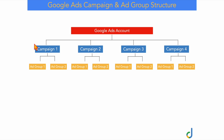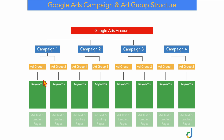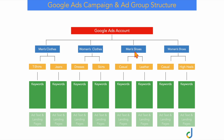The level below that, we have our different ad groups. For example, with our men's clothes campaign, you would have ad groups relating to men's clothes — so you might have a t-shirts ad group and then a jeans ad group. And then the level below that, we have all of our individual keywords relating to those products or services. Under women's clothes, you might have women's dresses, women's skirts, and women's jeans. And the same for the shoes — men's casual shoes and men's leather shoes, and women's casual shoes and any other type of shoes you wanted to sell.